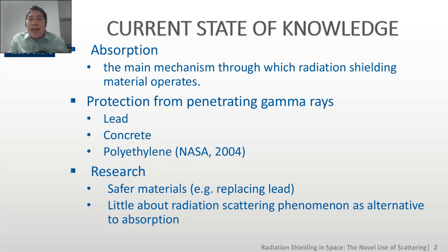What we know about those radiation shields is they function through the mechanism of absorption, where the photons are completely absorbed by the materials. Those radiation shields are mostly made up of lead, concrete, and polyethylene. In terms of the research being done in this field, safer materials with better shielding properties are being developed.